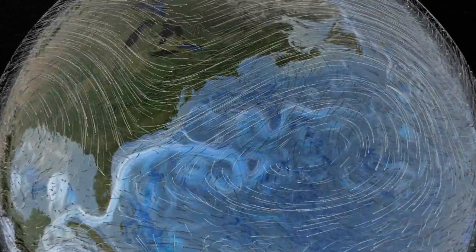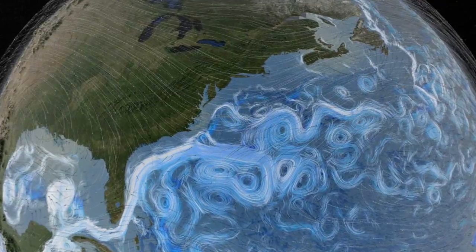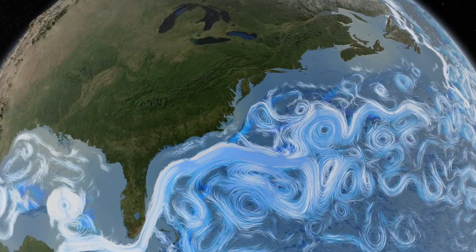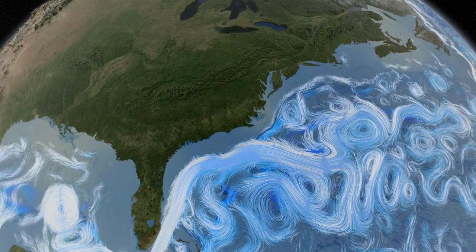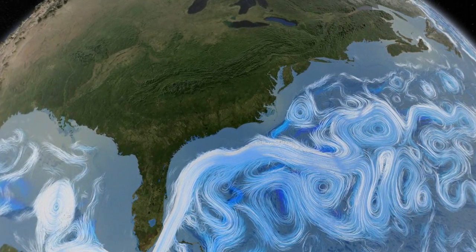Wind currents drive surface ocean currents. This computer simulation shows the Gulf Stream winding its way along the coast of North America.